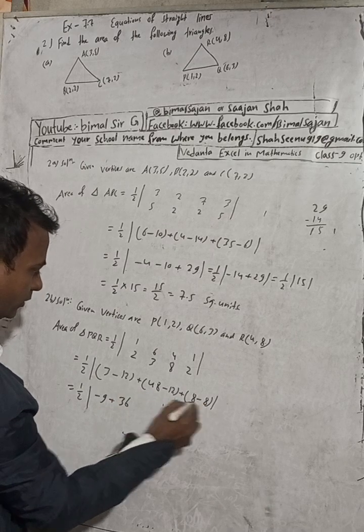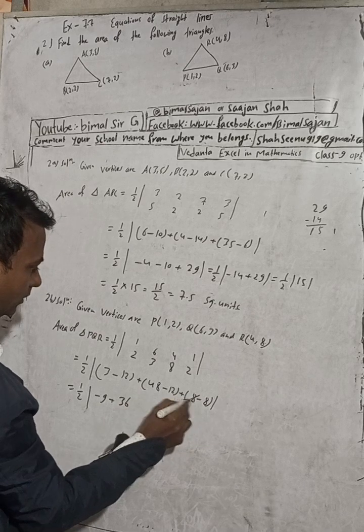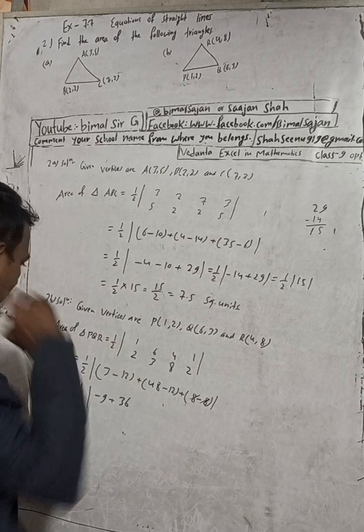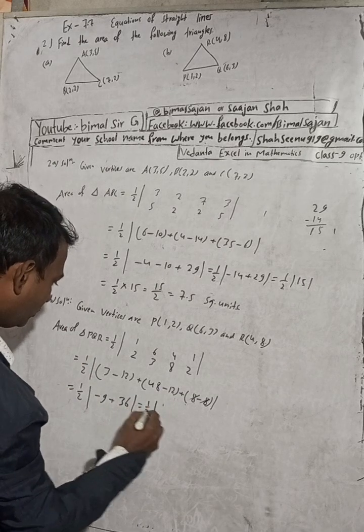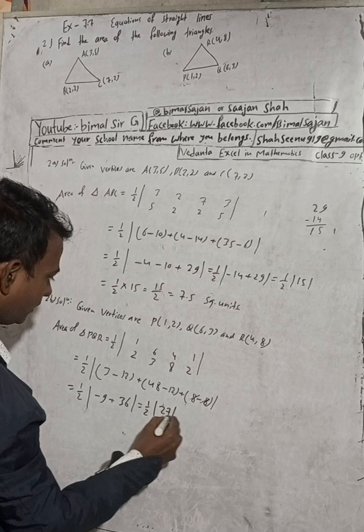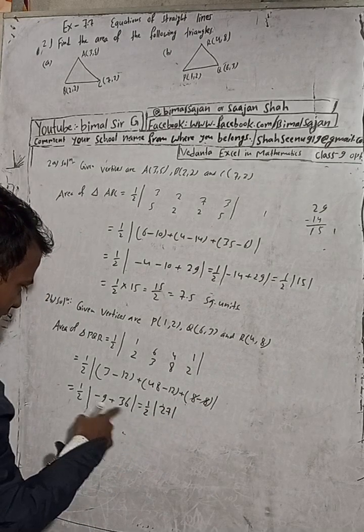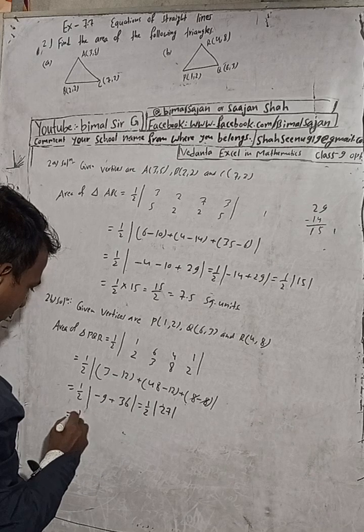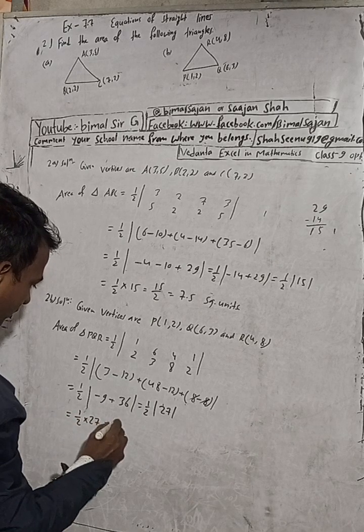Plus 4×2 is 8 minus 1×8 is 8, which cancels to 0, so leave it. Now here it is 1/2 modulus: 3 minus 12 is minus 9, plus 48 minus 12 is 36. So minus 9 plus 36 is 27.